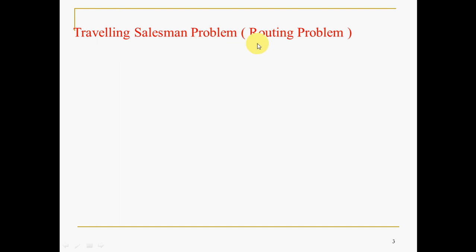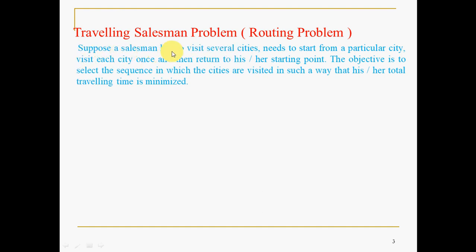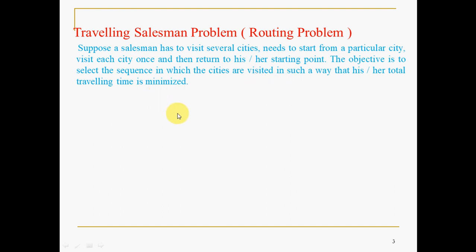The Traveling Salesman Problem, or TSP, is otherwise known as the routing problem. Suppose a salesman has to visit several cities, needs to start from a particular city, visit each city once, and then return to the starting point. The objective is to select the sequence in which the cities are visited so that the total traveling time is minimized. A medical representative, tourist, or salesperson starts from a home city, covers each city once and only once, and returns to the home city.